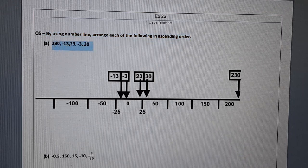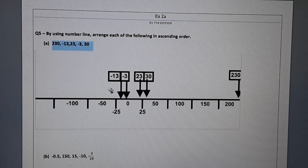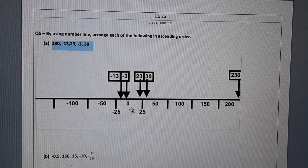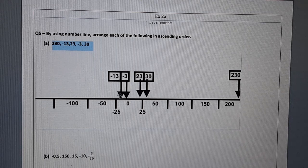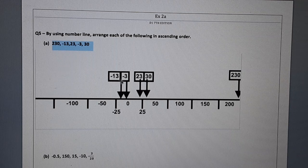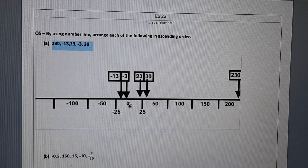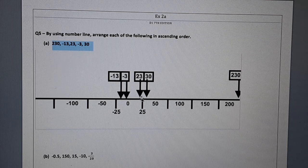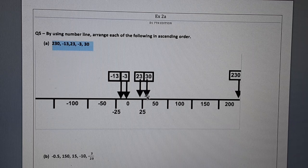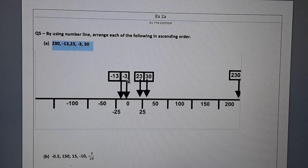Now our numbers are 230, minus 13, 23, minus 3, and 30. So this is the number line and the numbers are arranged over here. Minus 13 is the smallest number. Minus 13 will be over here. Then minus 3, just before the 0. Then 23, just before 25. Then 30 and 230 at the end. Now they are in ascending order.